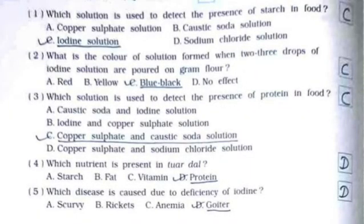Third: which solution is used to detect the presence of protein in food? The answer is option C — copper sulphate and caustic soda solution. Fourth: which nutrient is present in toor dal? The answer is option D — protein. Fifth: which disease is caused due to deficiency of iodine? The answer is option D — goiter.